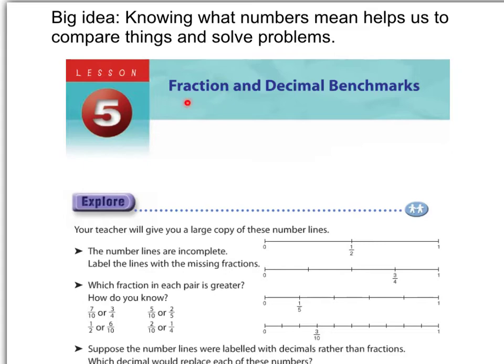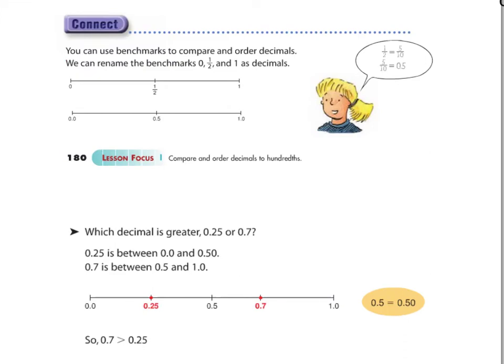And today we're talking about fraction and decimal benchmarks. We can use benchmarks to compare and order decimals. We can think about our benchmarks of 0, half, and 1 in decimal form. So 0, half now becomes 0.5, and 1 becomes 1.0.